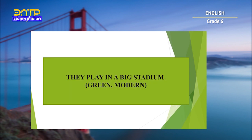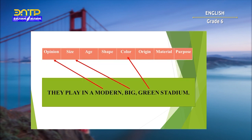Here we have a sentence where we need to add words — green and modern — in the sentence: 'They play in a big stadium.' Where do we add green and modern? Remember the order of adjectives: opinion, size, age, shape, color, origin, material, purpose. Let's see the answer: They play in a modern, big, green stadium.